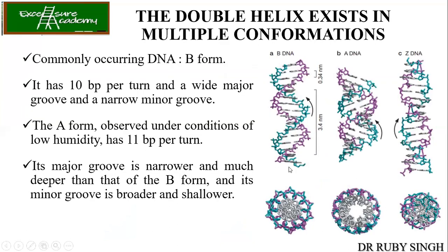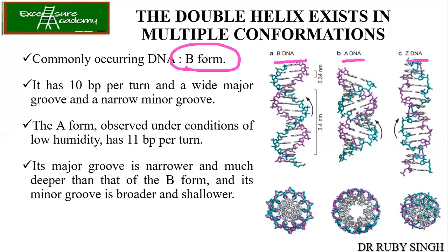Now let's talk about the different conformations of DNA. There are three types: B-DNA, A-DNA, and Z-DNA. The commonly occurring DNA is the B form. It has 10.5 base pairs per helical turn and exists under high humidity conditions, meaning a high amount of water. In the case of A-DNA, under low humidity conditions, there are 11 base pairs per turn.